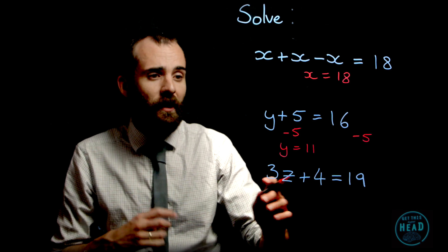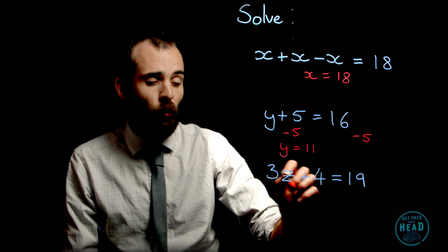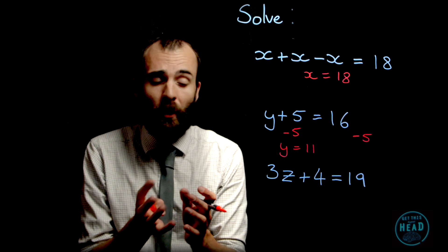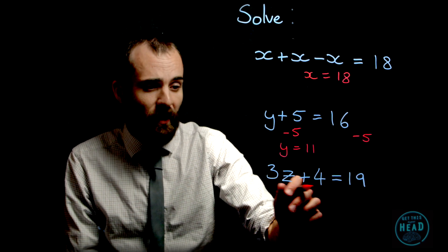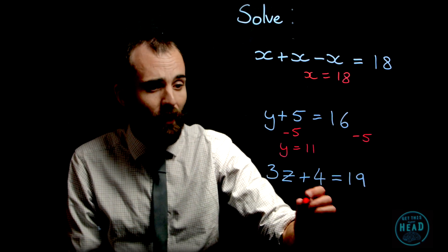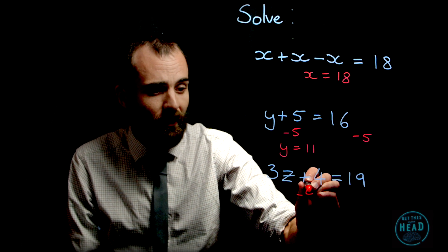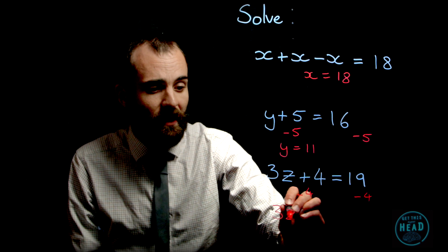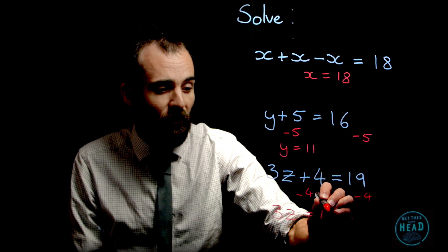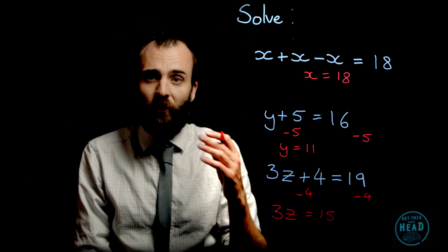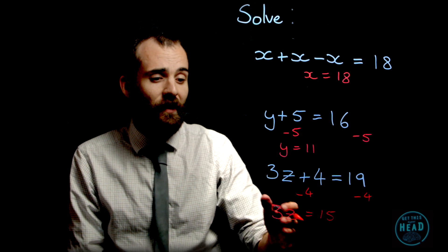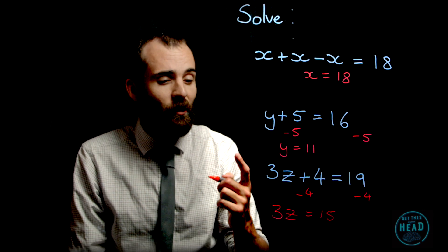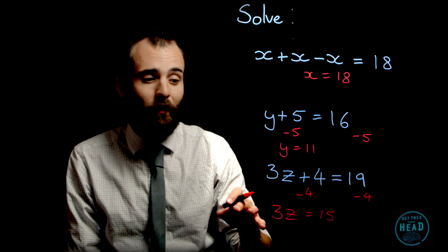In the same way then, I can get rid of this extra number in order to work out what the 3z by itself would be. If I've got to take away 4 from this side, I've got to take away 4 from this side, do the same to both. That leaves me with 3z equals 15. If 3z equals 15, I can then divide that by 3 to get what 1z equals, and 15 divided by